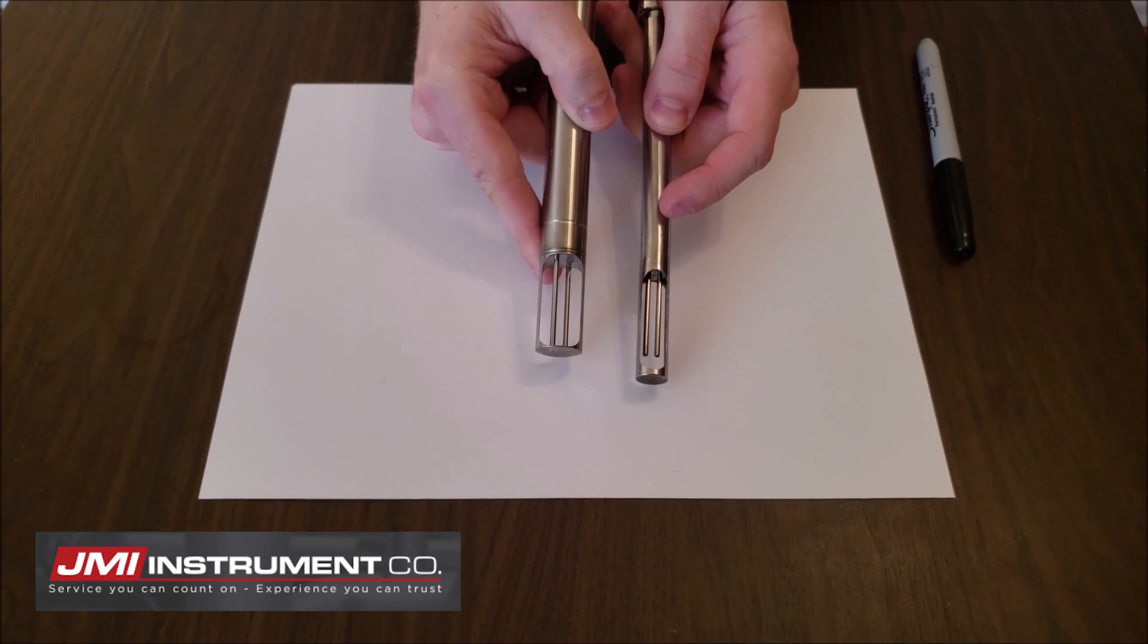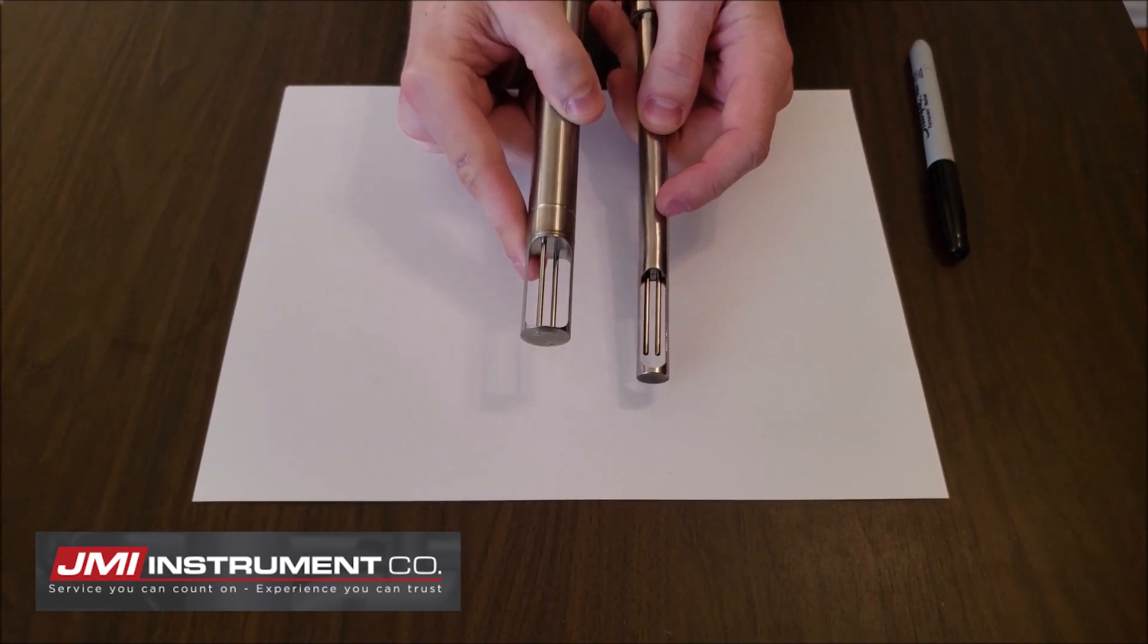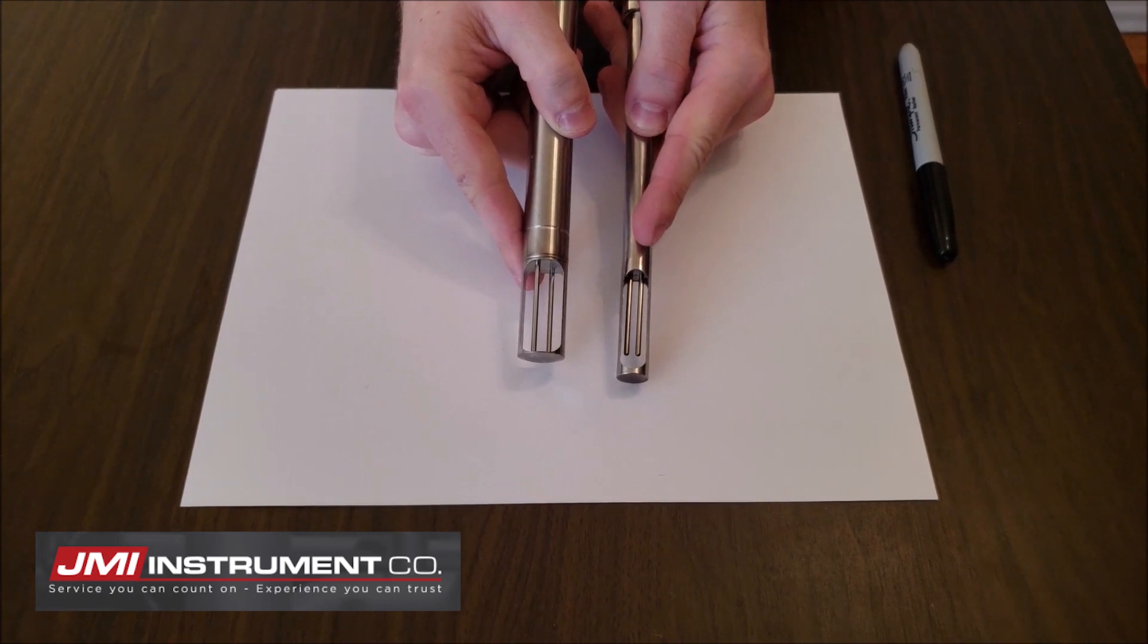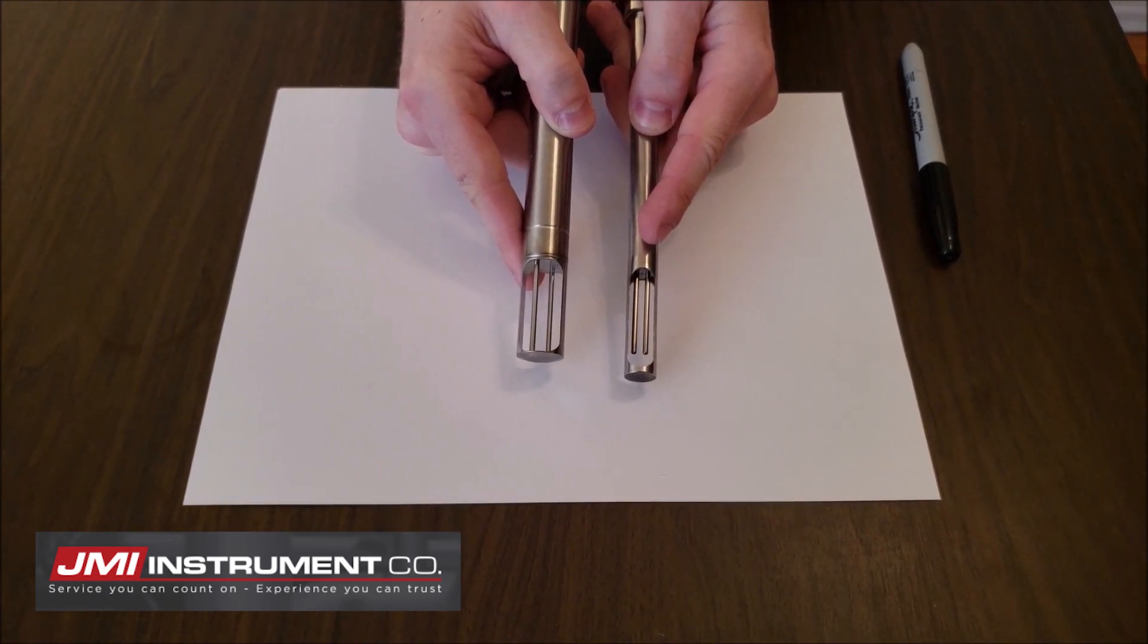You can see how the offset of the probe on the Fox Thermal is about 35 degrees, whereas the other two sensing elements are directly in line.